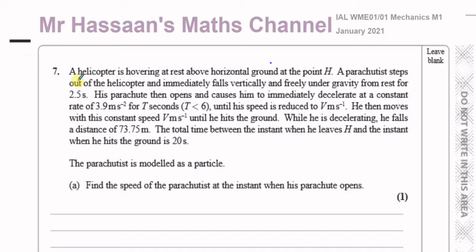This question is about a helicopter which is hovering at rest above a horizontal ground at the point H. A parachutist steps out of the helicopter and immediately falls vertically and freely under gravity from rest for 2.5 seconds. His parachute then opens and causes him to immediately decelerate at a constant rate of 3.9 meters per second squared for T seconds, where T is less than 6, until his speed is reduced to V meters per second. He then moves with this constant speed V meters per second until he hits the ground. While he is decelerating, he falls a distance of 73.75 meters, and the total time between the instant when he leaves H and the instant when he hits the ground is 20 seconds. The parachutist is modeled as a particle.